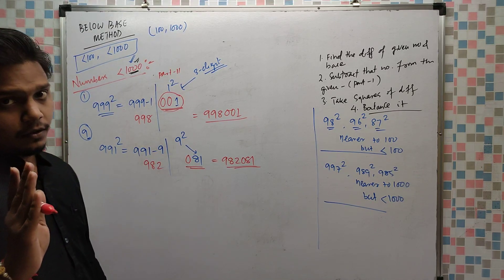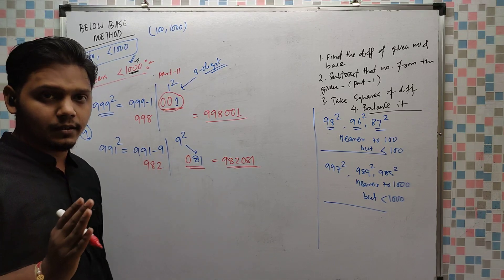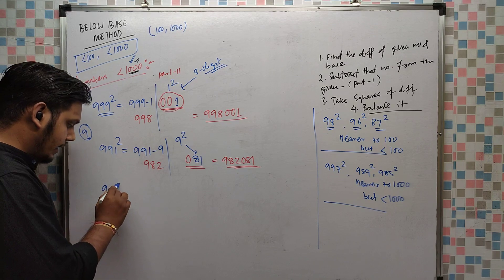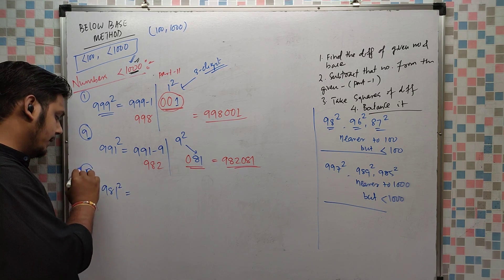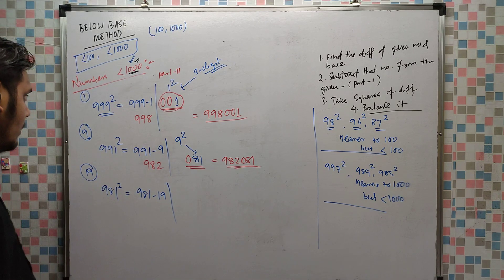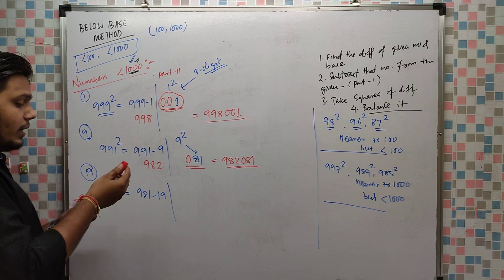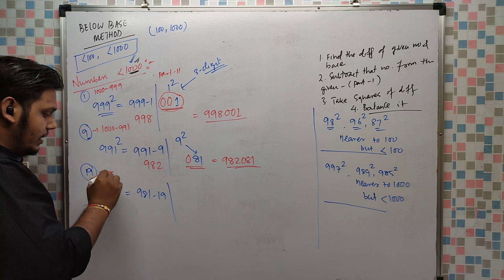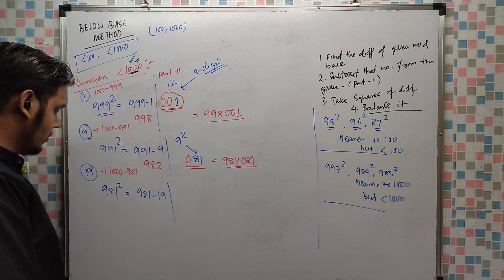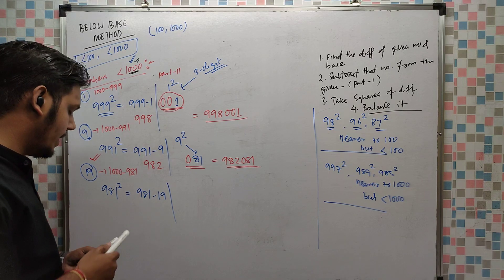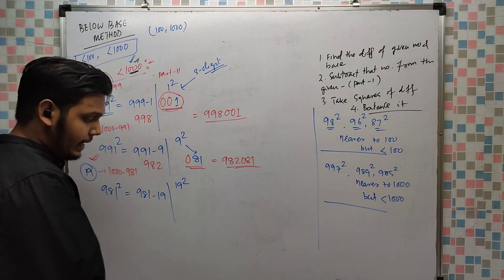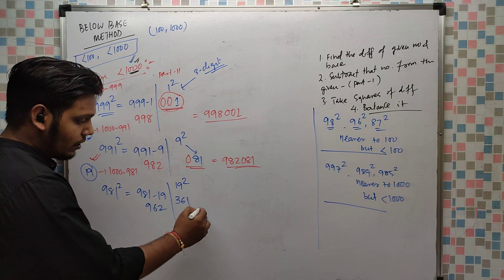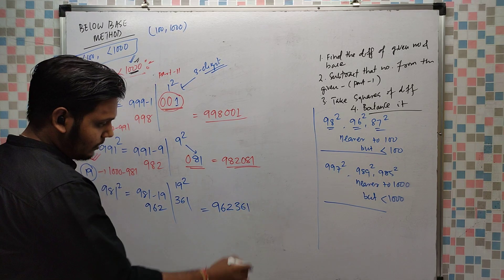If you remember squares up to 1 to 30, it will take very little time — within 3 to 5 seconds you will be able to do it in your mind. One more: 981². How much less than 1000? It is 19 less. So 981 minus 19 is 962, and 19² is 361 — already 3 digits, so no adjustment needed. The answer is 962361.